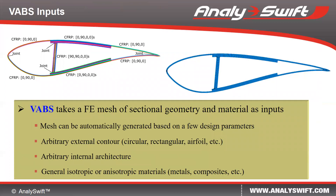To use VIPS, all the user needs is a finite element mesh of the cross-section, including all the geometry and material information. We have developed a preprocessor called Pre-VIPS, which can be used to automatically generate the mesh based on a few design parameters. The external contour could be arbitrary, such as rectangular, circular, elliptical, or airfoil shape. Internally, it could also have an arbitrary topology made of multiple webs and sparse fading cores, or even holes or non-structural masses. The material could be general isotropic or anisotropic materials, such as metals, composites, or a combination of them.